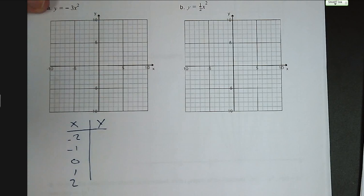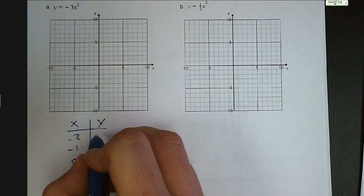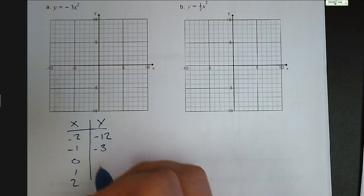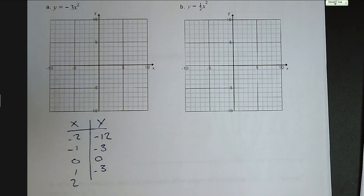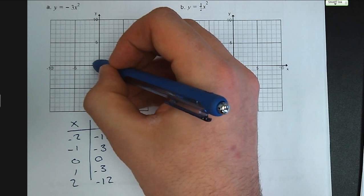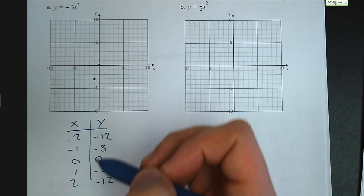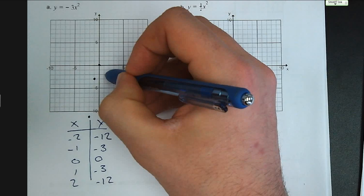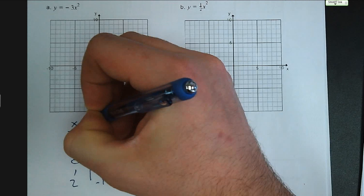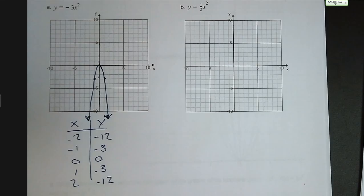Negative 2 squared is 4, times negative 3 is negative 12. Negative 1 squared is 1, times negative 3 is negative 3. 0 squared is 0. 1 squared is 1, times negative 3 is negative 3. And 2 squared is 4, times negative 3 is negative 12. When we put our points down, we've got 0, 0; negative 1, negative 3; negative 2, negative 12. We do the same thing on the positive side. You'll notice the graph is symmetrical and our vertex is at 0, 0. Going one unit to the left and one unit to the right gave the same y value — both negative 3.